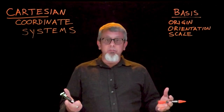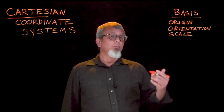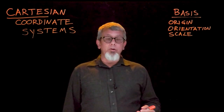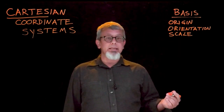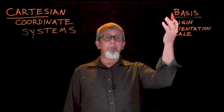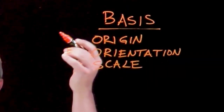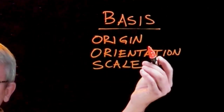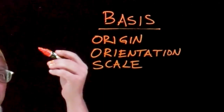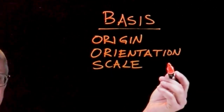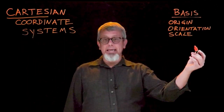As we've discussed in a previous video, one of the things we want to do to describe locations in space is to define our basis. And there are three parts to our basis: determining an origin or starting point, determining an orientation, and determining a scale.